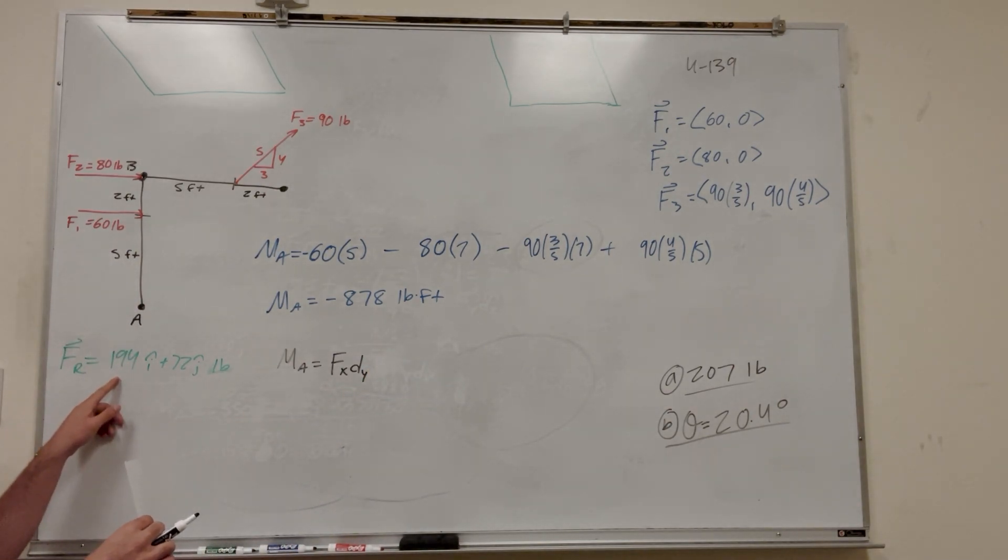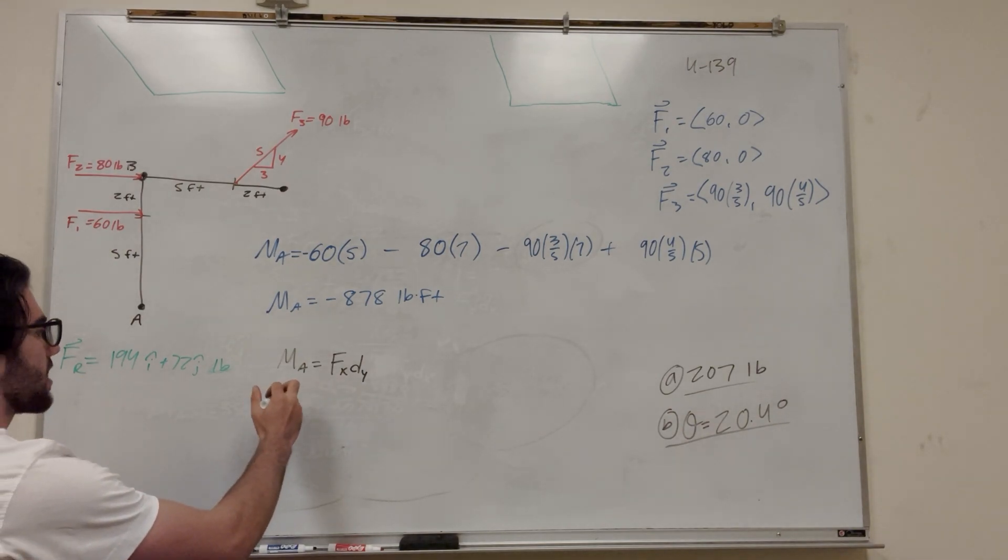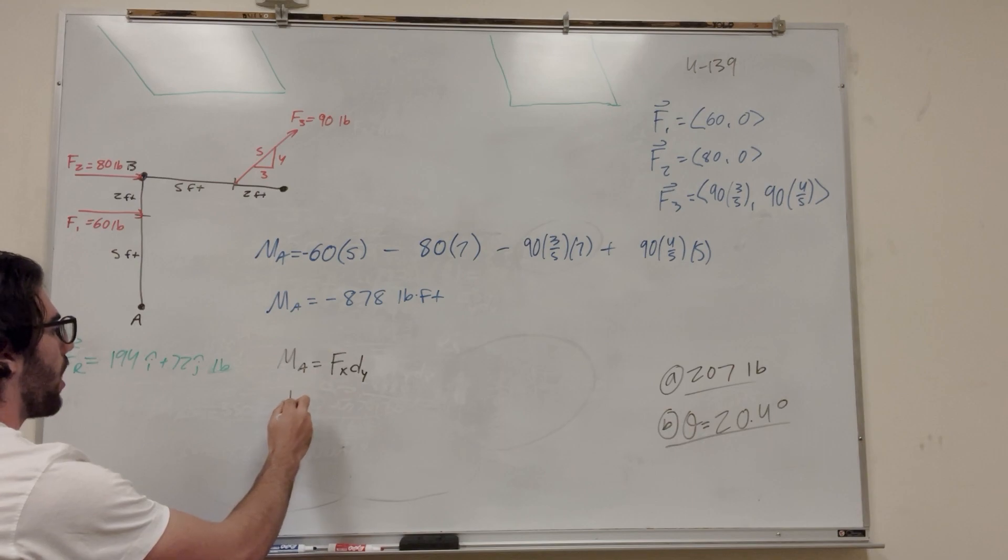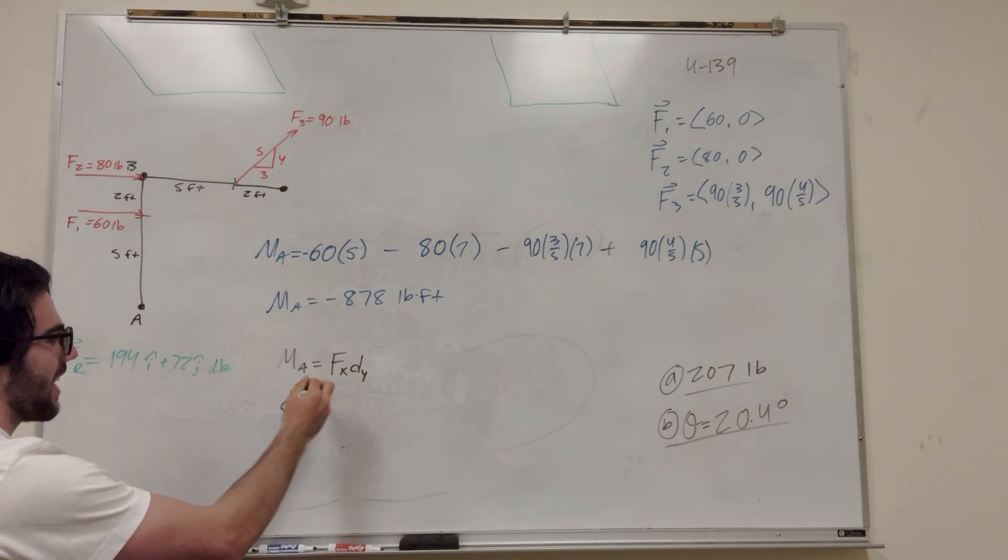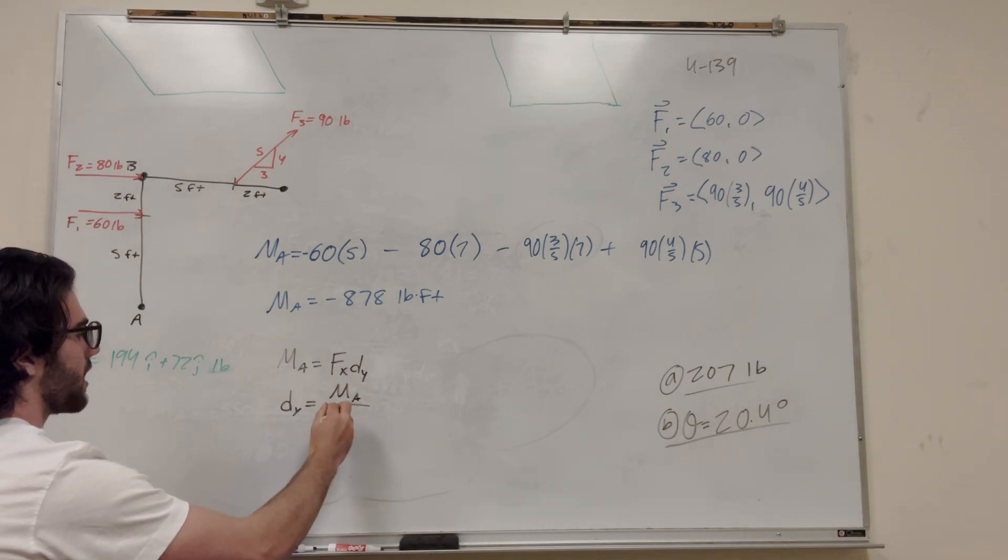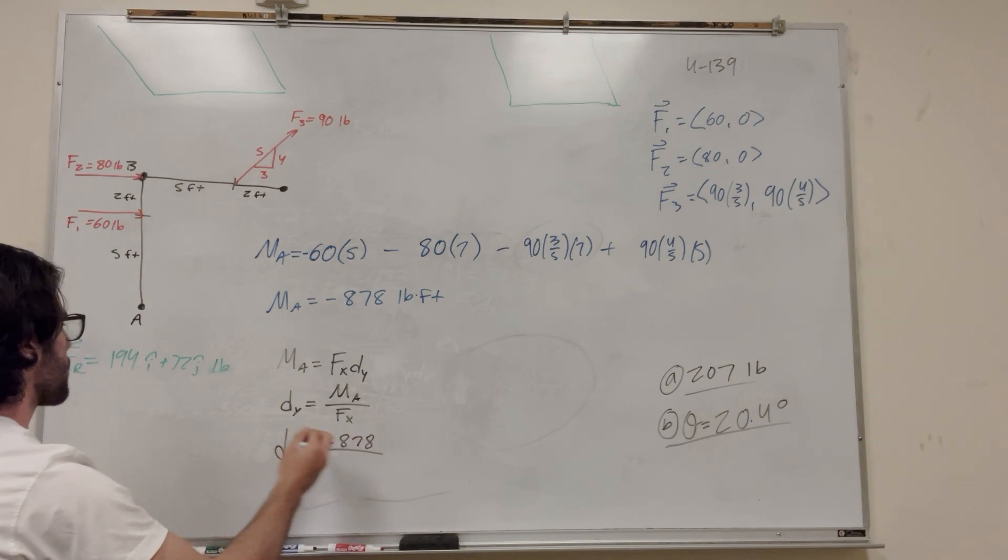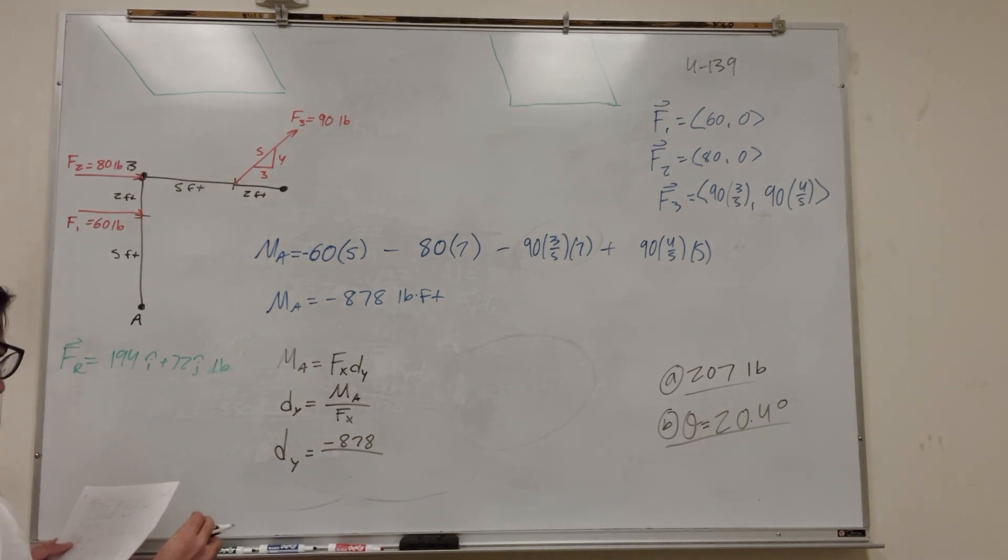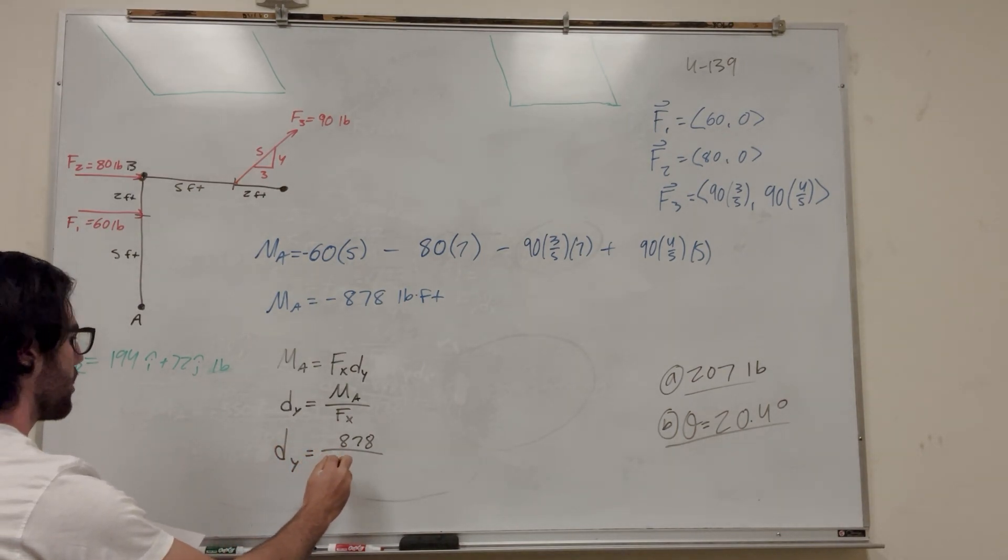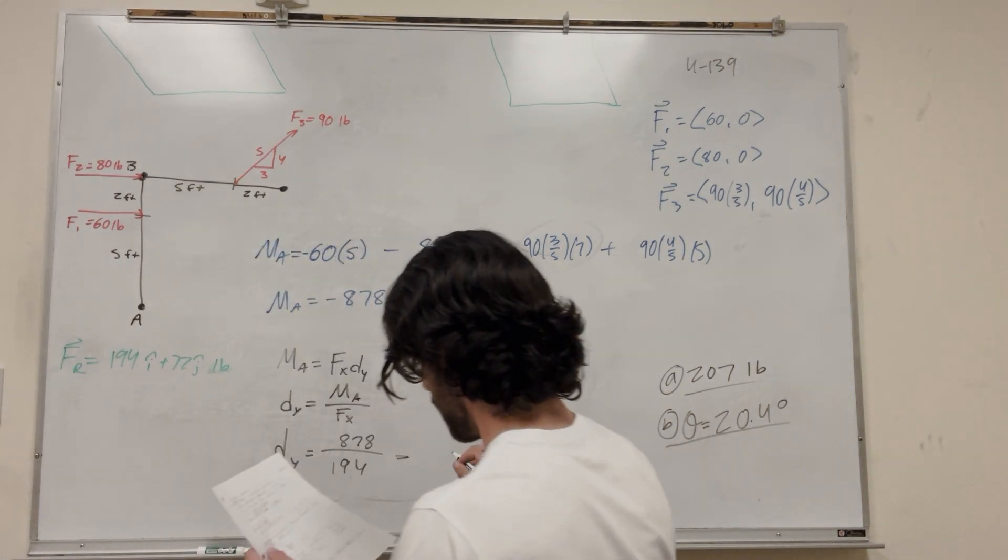So we have the force x of our resultant force. So our first result is we're trying to find distance y. So we can say distance in the y is what we're trying to find. So if we divide by force of the x, we're going to get MA over force of the x. So we know both of these numbers, so distance in the y is MA, so we just found negative 878. And force of x is what we just found here. Oh, we have to make sure that we do a negative here too. I forgot about that. And then this is going to be 194. This is just going to give us the distance, 4.33 feet.